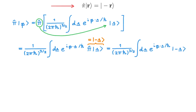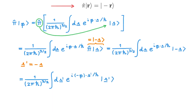It is now convenient to change variables to r' equal to minus r. With this change the integral becomes this. Two things to note: first, I have conveniently rearranged the exponent so that the minus sign comes up with the p. And second, we should in principle have d(minus r') here, but as the integral is over all space, the integral over d(minus r') is equal to the integral over dr', so I've directly written dr'. This expression is now simply the Fourier transform of the state with momentum minus p, so we can write it as the ket minus p.